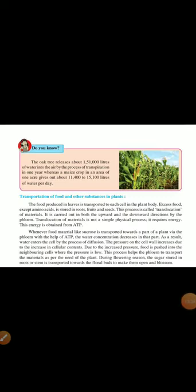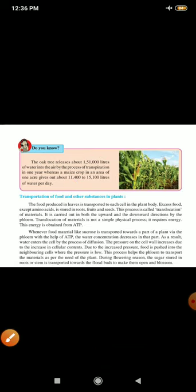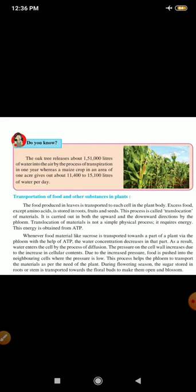Now, let us continue with the next page. Here on page 165, that pink box is deleted. Let us learn transportation of food and other substances in plants. The food produced in the leaves is transported to each cell in the plant body. Excess food except amino acids is stored in the roots, fruits and seeds. You can underline that - except amino acids is stored in the roots, fruits and seeds. This process is called as translocation. You can underline that definition.